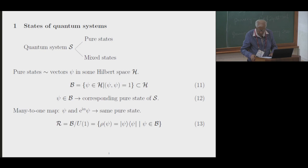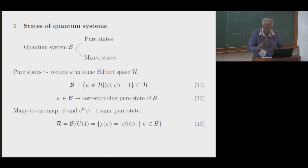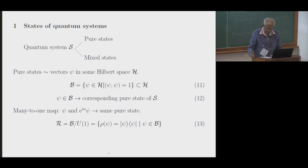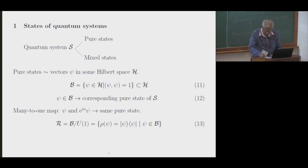Let me start with a very brief description of the way we describe states of a quantum mechanical system. Suppose you have a system which I denote by script S. The state of this system may be pure — that is, a state of maximum possible information — or it may be a mixed state, an impure state. Throughout this talk, I will consider only pure states. Such states are described using vectors in a complex Hilbert space, which I write as script H. The dimension of the Hilbert space may be finite or infinite, depending on the nature of the system.